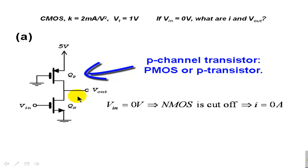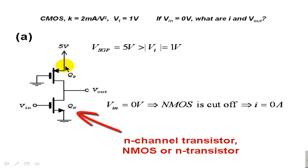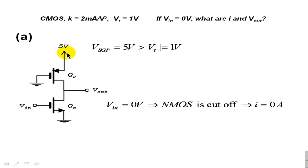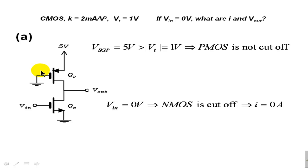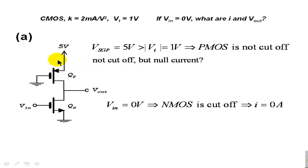That signifies that the drain current of the N transistor is 0, but that is the same drain current of the other transistor. In the P transistor, the source-gate voltage is 5 volts, and that is more than the VT of 1 volt. That means this transistor cannot be cut off — the source-gate is more than VT. There is a conduction channel in this P transistor. It is not cut off, but the current is null because this N transistor is cut off.